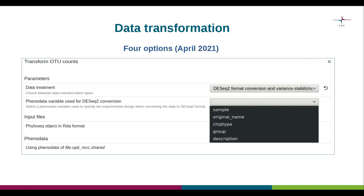If you are using the DESeq2 format conversion option, there is an additional parameter called phylodata variable used for DESeq2 conversion. This is because the DESeq2 conversion step specifies a formula upon which the conversion is based. For example, if we were interested in comparing different sample groups as specified under the phylodata column called group, we would choose group as the variable here.